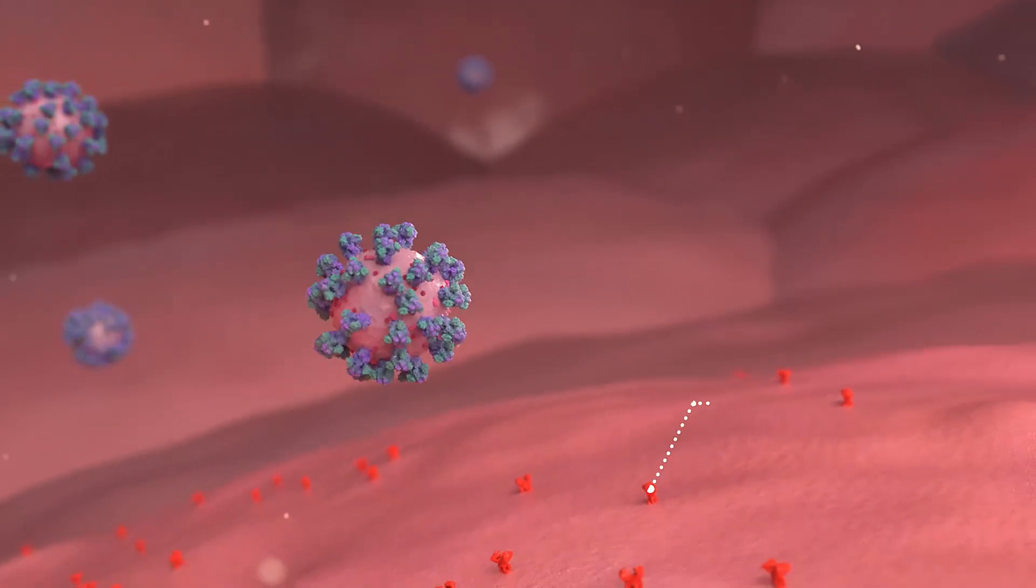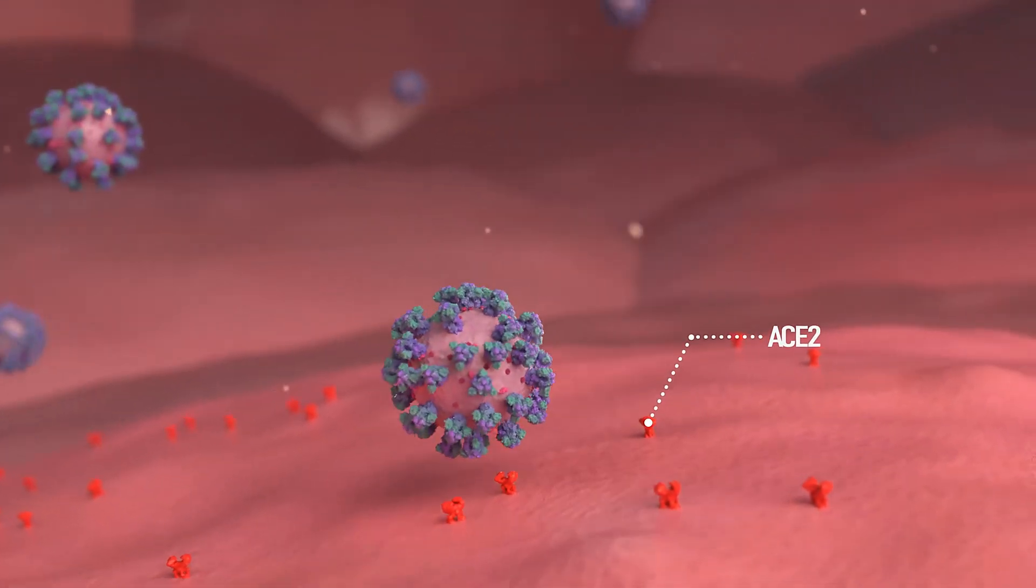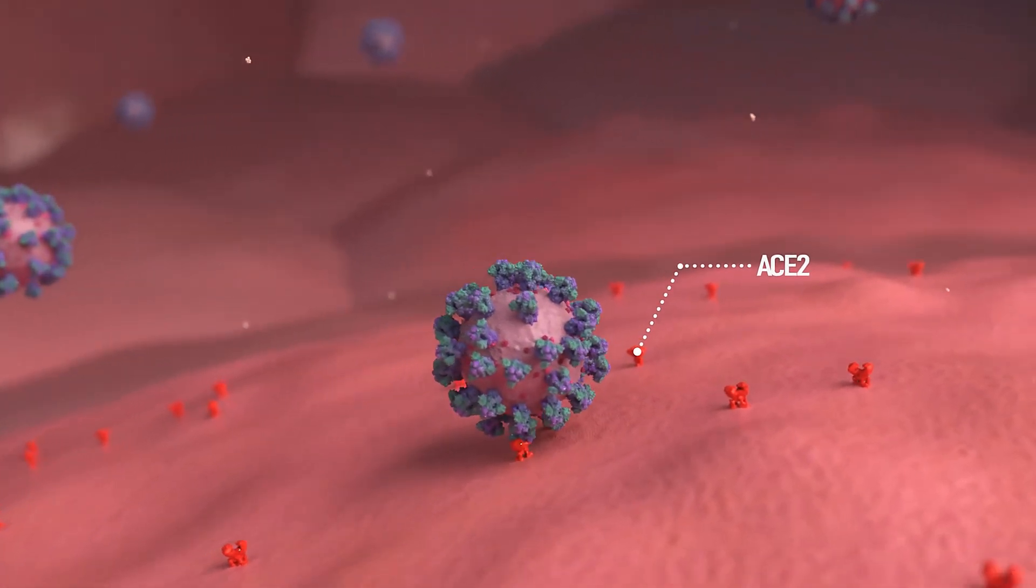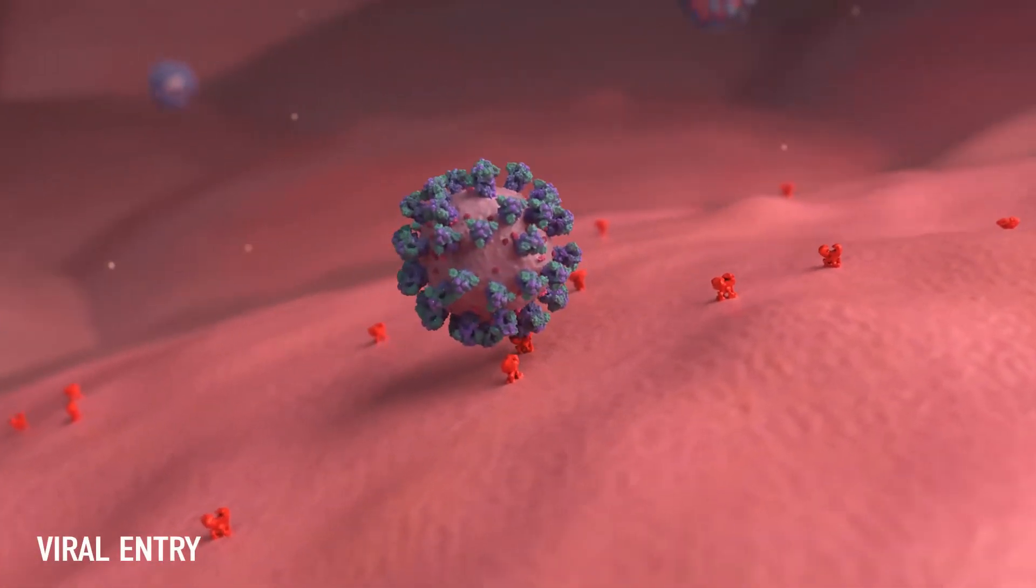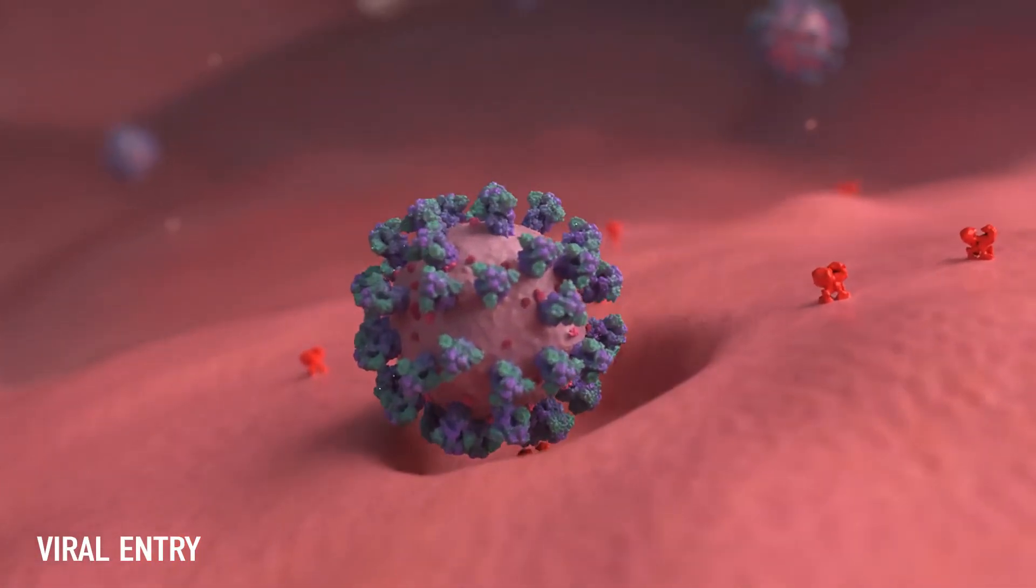This spike protein recognizes and binds to the receptor protein called ACE2 on the surface of the host cell and plays a key role in allowing the virus to invade into them.